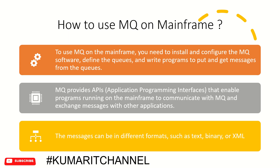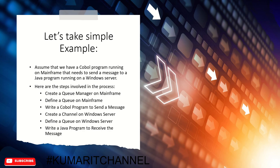To use MQ on the mainframe, you need to install and configure the IBM MQ software, define queues, and write programs to send (put) or receive (get) messages from the queues. The MQ API enables programs running on the mainframe to communicate with MQ and exchange messages with other applications. Messages can be sent or received in different formats — text, binary, or XML. For example, assume you have a COBOL program on the mainframe and want to send a message to a Java or Windows system.